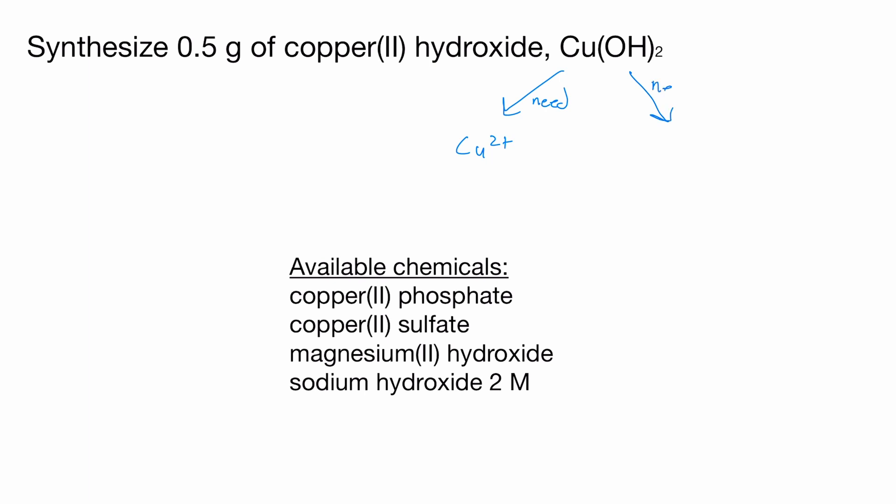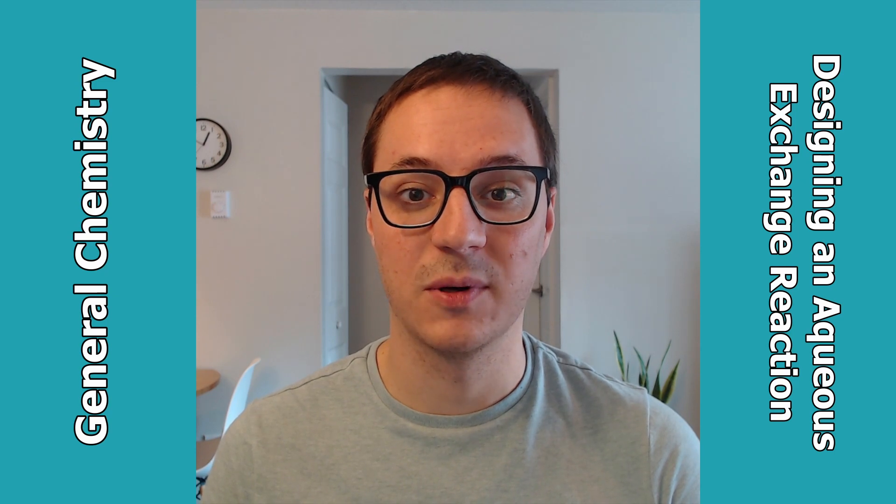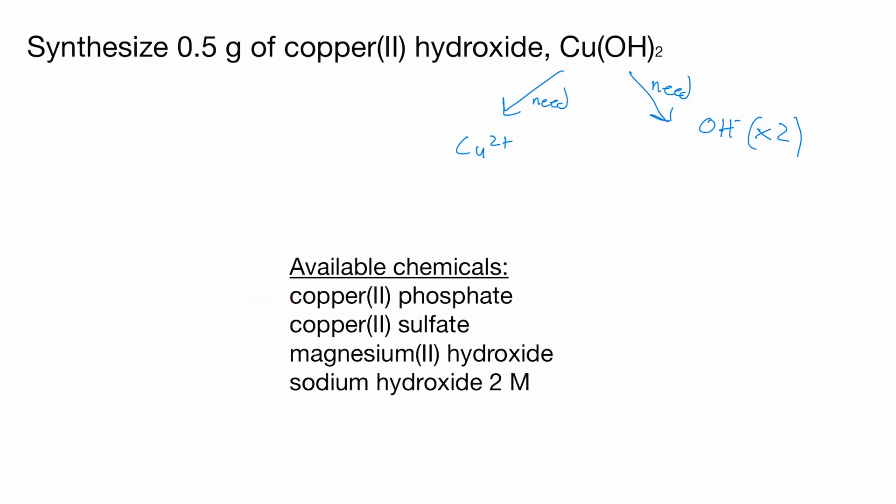For copper(II) hydroxide, we'll need a source of both copper(II) and hydroxide. From the list of chemicals, there are two possible sources of copper(II): copper phosphate or copper sulfate.